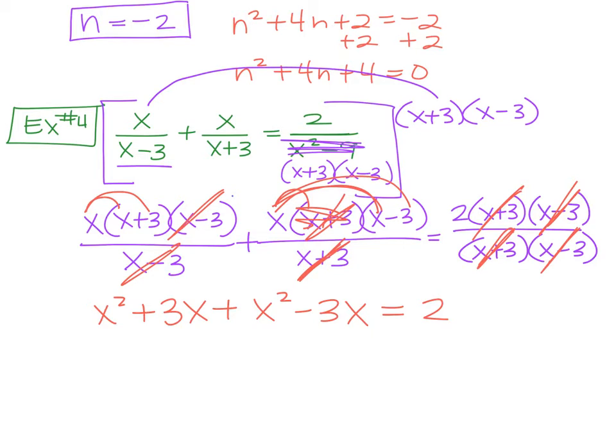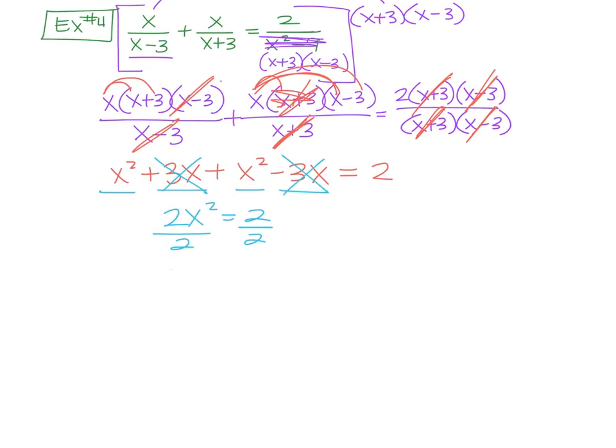So if you solve this, notice what happens here. It looks like it's a quadratic, but 3x minus 3x is 0. So those go away. You're left with x squared plus x squared. So 2x squared equals 2. You're going to divide by 2 on both sides. You get x squared equals 1. So what is your answer? Plus or minus 1.